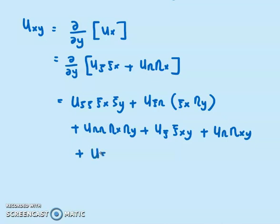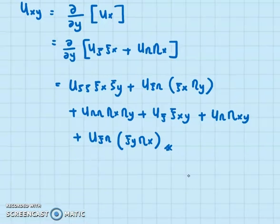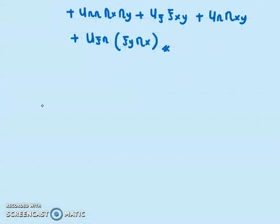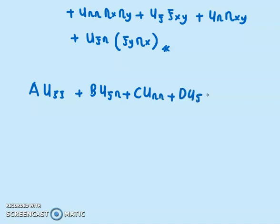We also have U_ψη·η_y·ψ_x. Substituting all these transformations into the second order PDE gives the transformed equation: A·U_ψψ + B·U_ψη + C·U_ηη + D·U_ψ + E·U_η + F·U = G.